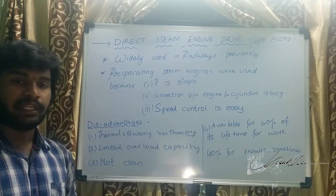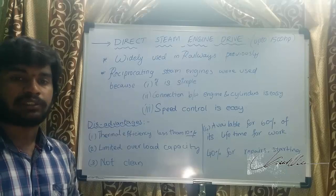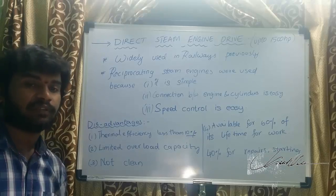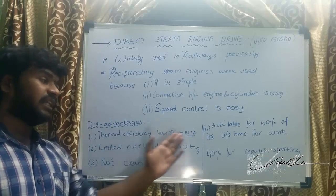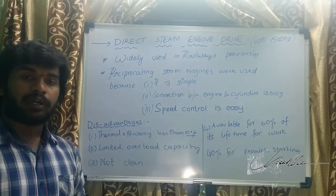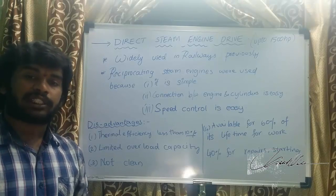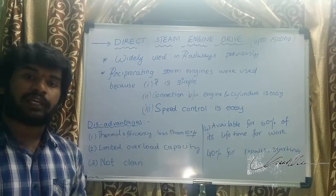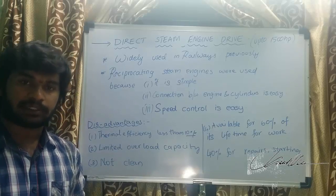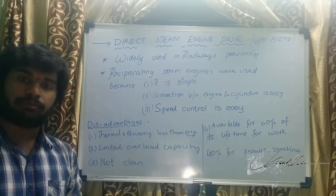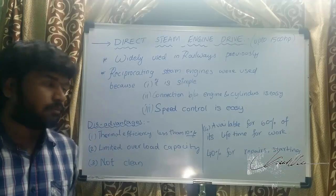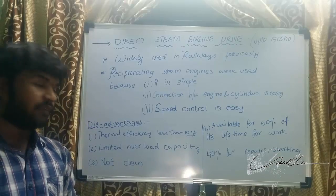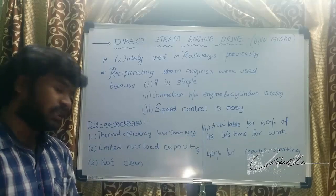Present-day engines in motor vehicles are also reciprocating type but they are IC engines — internal combustion engines. The disadvantages of direct steam engine drives: the thermal efficiency is less than 10 percent. Recall that an electric steam power plant has about 29-30 percent efficiency, and a super thermal power station achieves 40 percent because it has a condenser. On a moving vehicle, a condenser cannot be provided, so thermal efficiency is only 6 to 8 percent.